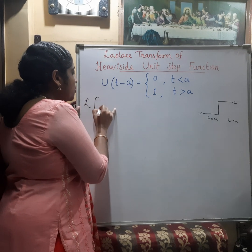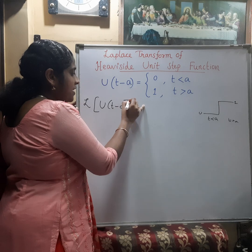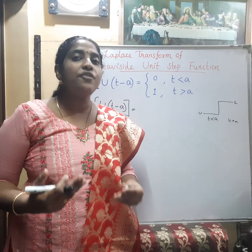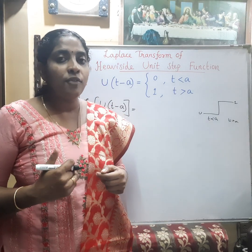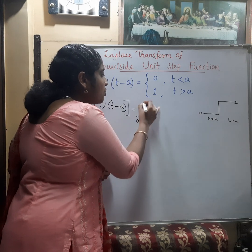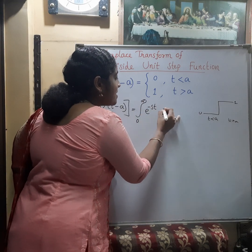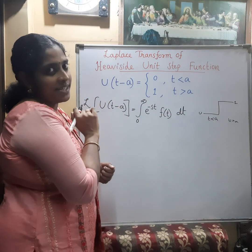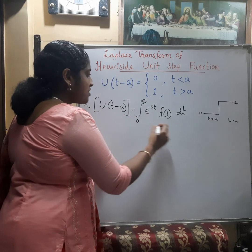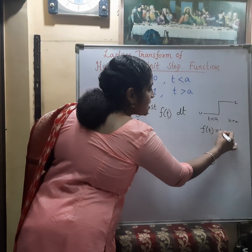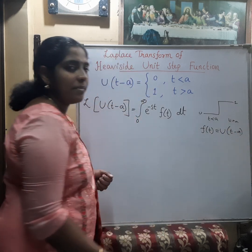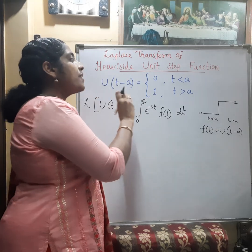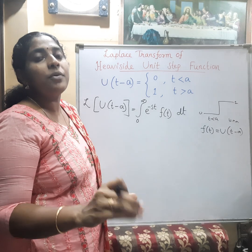The Laplace transform of u(t − a), the unit step function, can be derived starting from the basic formula of Laplace transform: the integral from 0 to infinity of e^(−st) f(t) dt. Here f(t) is the unit step function u(t − a). We can split this integral because the unit step function has two values, 0 and 1, depending upon the value of a.